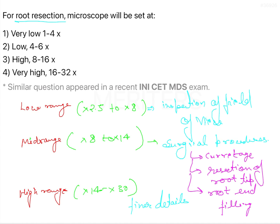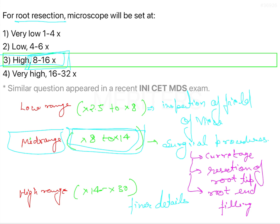For root resection, the mid range applies, which is 8-14x. Among the given options, 8-16x is the nearest match. There are many classifications and no single generalized one, but using this magnification range, 8-16x falls closest to mid range surgical use. The correct answer is option 3 — high, 8-16x — which is used for microsurgery with the direct operating microscope, including root resection.